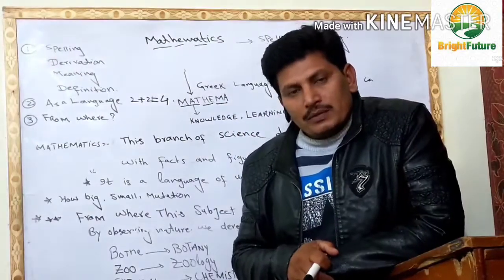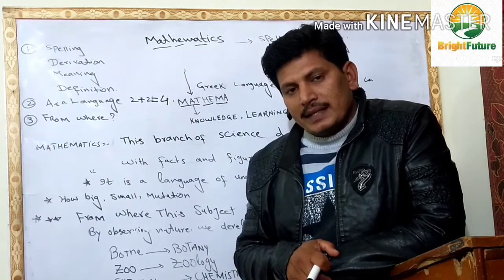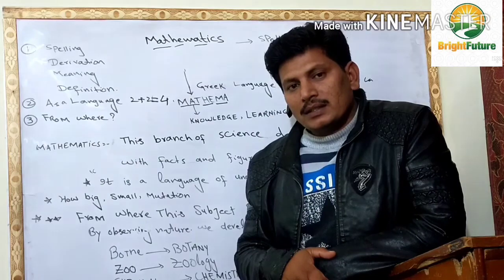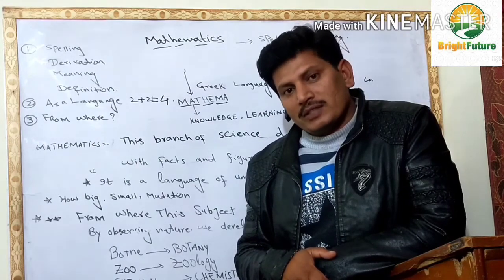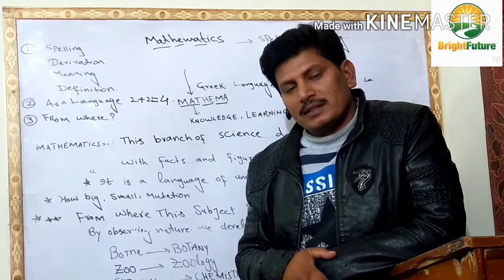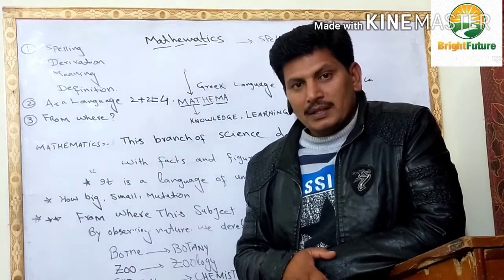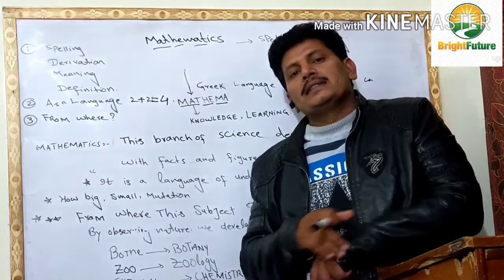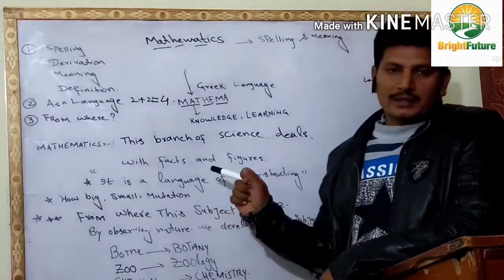What is the correct definition of mathematics? Mathematics is a branch of science, which is also called the order of sciences. We can say it's a branch of science which deals with facts and figures.